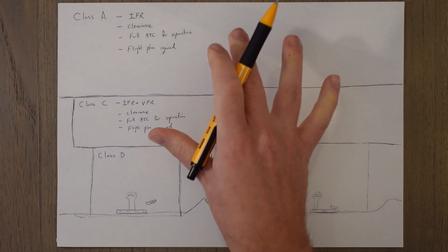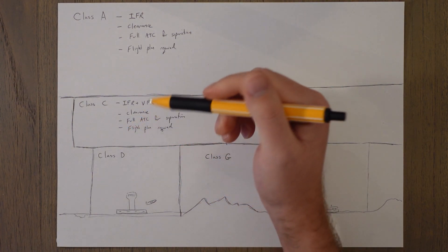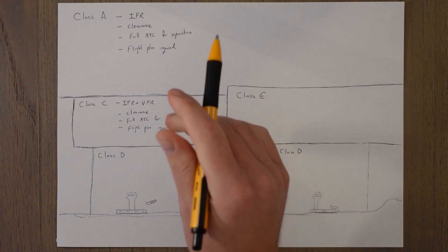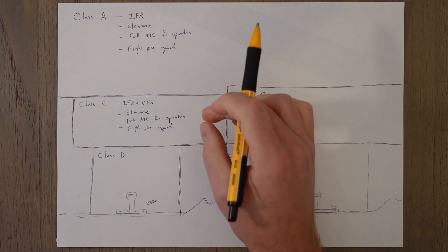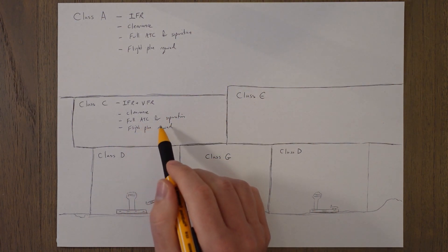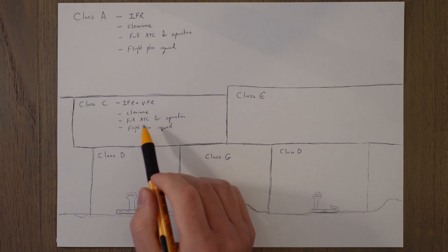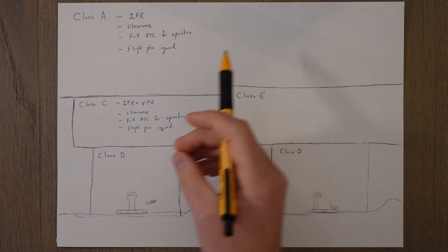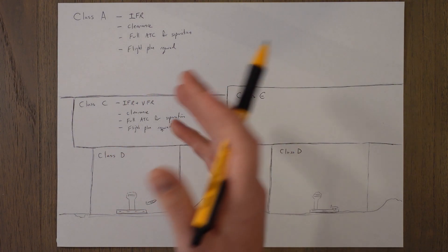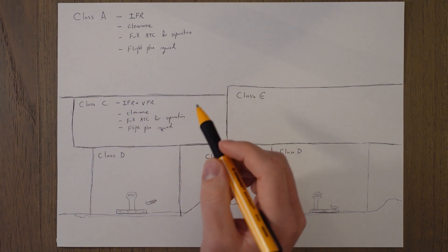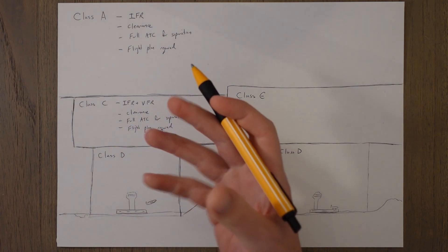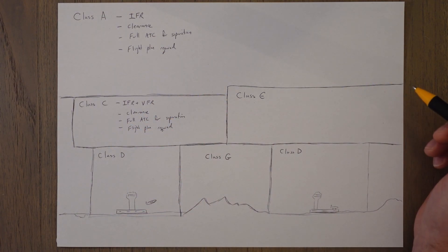Class B airspace doesn't really feature that much but class C airspace is quite common. This is essentially class A plus VFR. So it's full air traffic control. We've got IFR and VFR traffic. We need a clearance to enter and separation is given between all aircraft whether it's VFR or IFR traffic and that means that a flight plan will be required to fly within class C airspace.